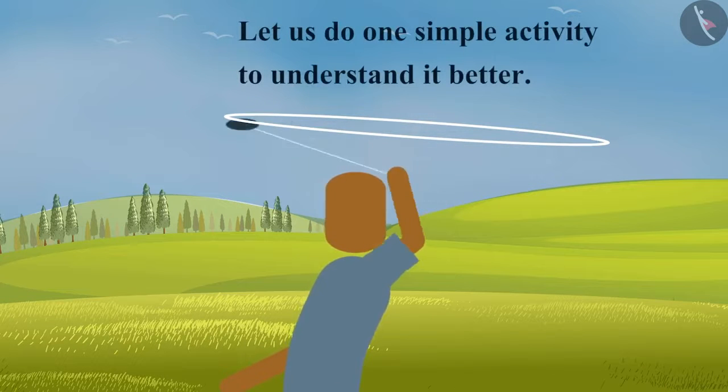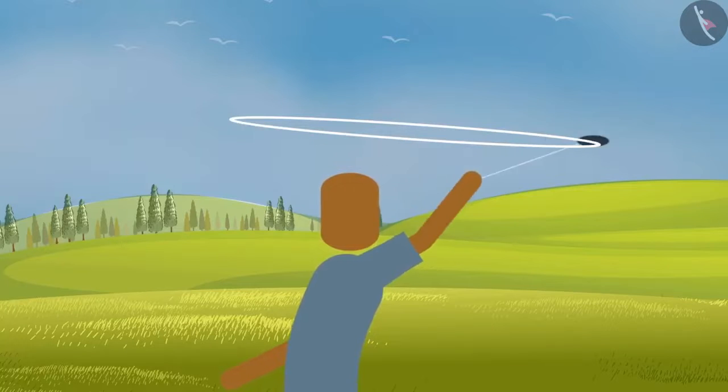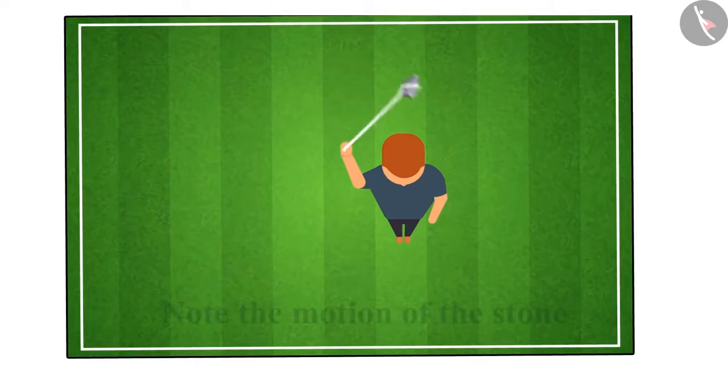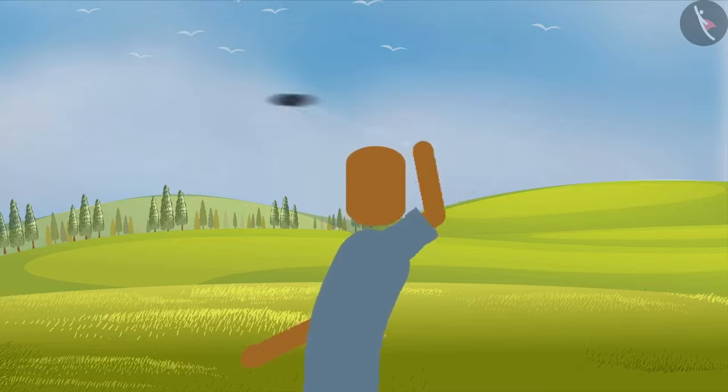Let us do one simple activity to understand it better. Take a piece of thread and tie a small stone at one end. Hold the other end and whirl it in a horizontal circle. Note the motion of the stone. Release the thread but only after ensuring that no one is around you.